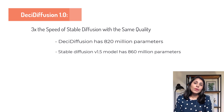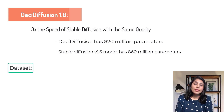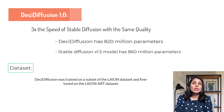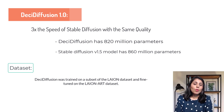Before moving to the demo, let's talk about the dataset which Desi used to make this model. Desi Diffusion was trained on a subset of the Leon dataset and fine-tuned on the Leon art dataset. This Leon dataset is in the form of image-text pairs.